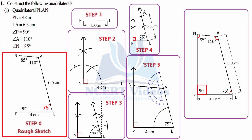In step four we are given LA equals 6.5 centimeter, so we readjust the compasses to 6.5 centimeter, place the needle at vertex L, and wherever it intersects the ray drawn from L, that is our required vertex A. We jot down its measurement as 6.5 centimeter. Pause and try to construct it yourself.